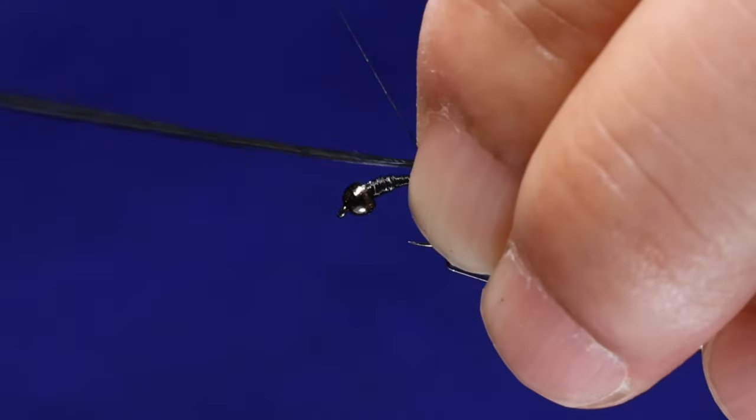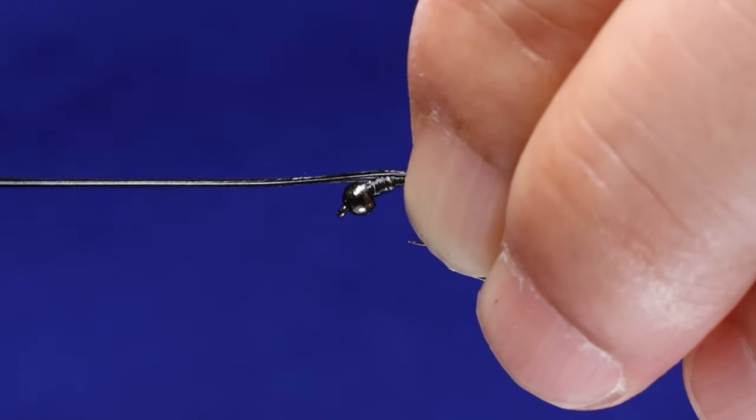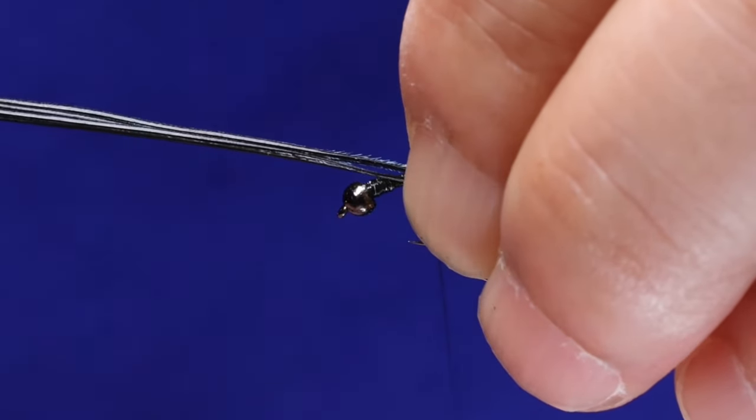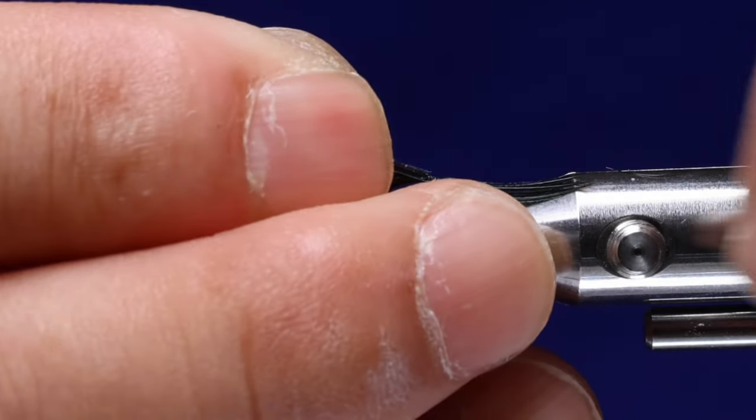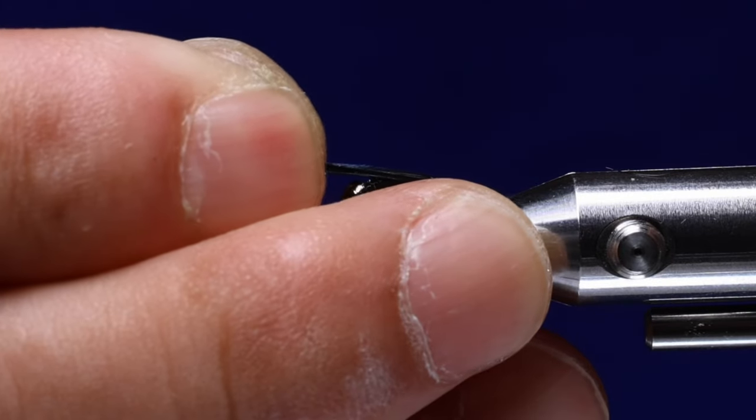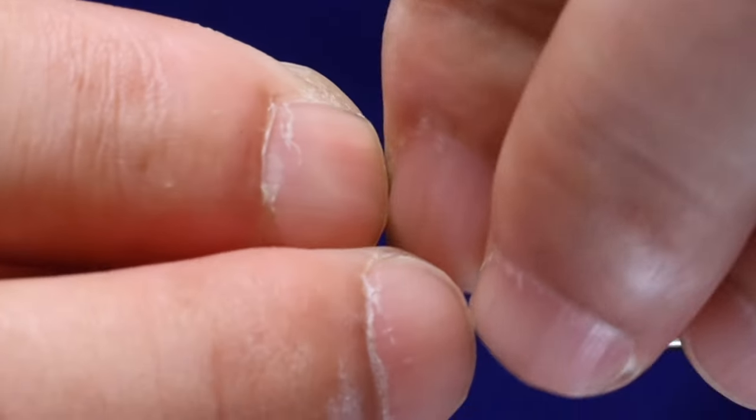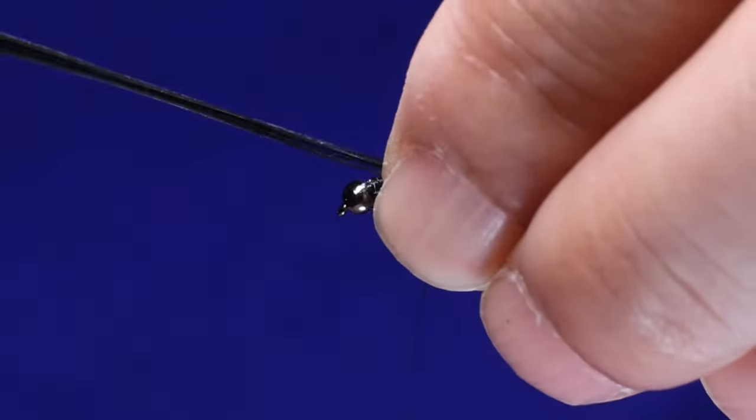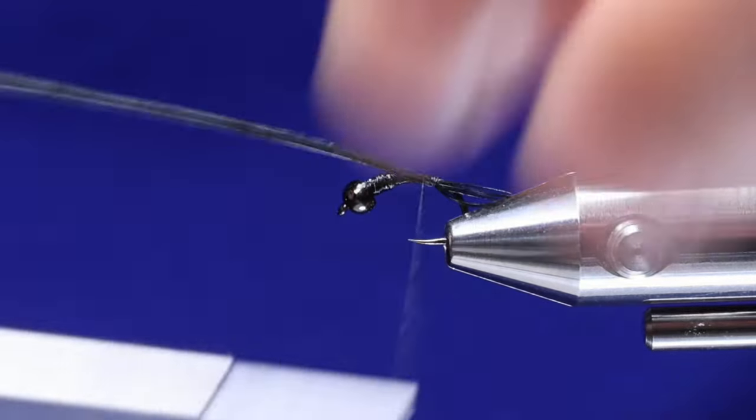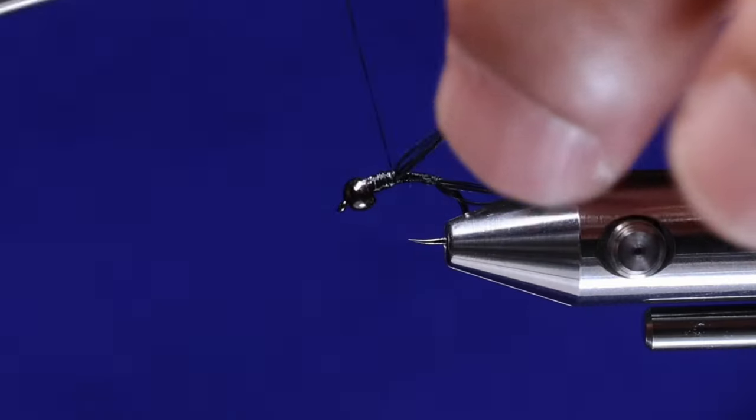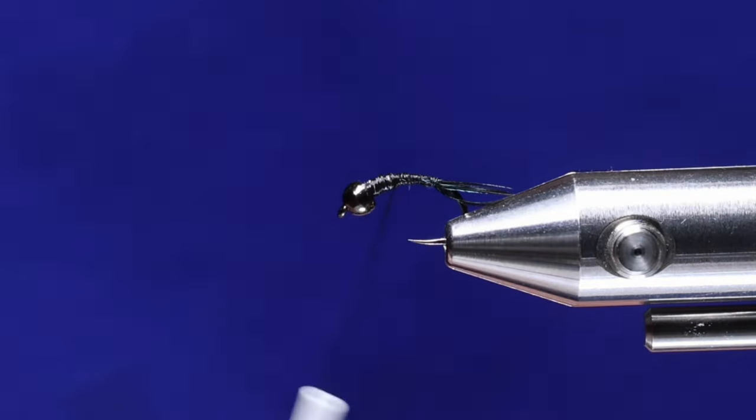We're going to do two loose collecting wraps. And then from there just pull the fibers until you get the length of the tail that you want. We're going to want the tail approximately about three quarters of the hook shank. And then from there secure the rest of the pheasant tail fibers. I'll take it up to just behind the lead wires and then you just break it off.